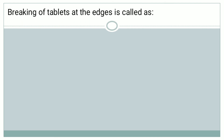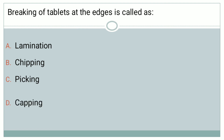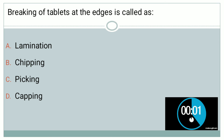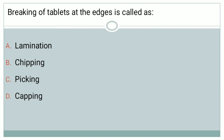The next question is: breaking of a tablet at the edges is called as — option A: lamination, option B: chipping, option C: picking, and option D: capping. The correct answer is option B — chipping.